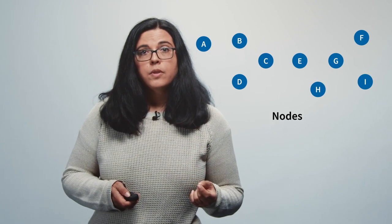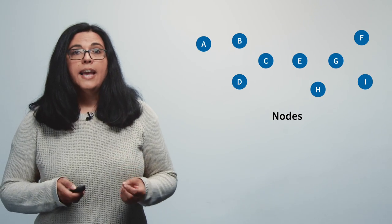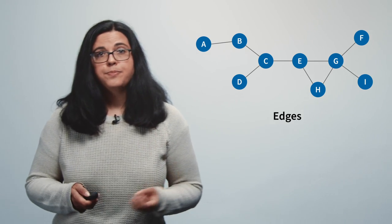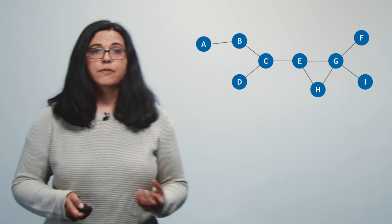What is a network? A network consists of two major elements. The nodes, these are the points also called vertices. And the relationships between the nodes. They are called edges, ties or links. And networks are often represented as graphs.